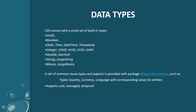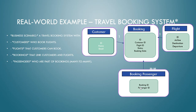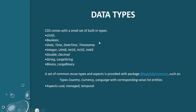Next, data types. For an ID field it needs to be unique, so we use UUID, which generates a unique identifier for every user. These are some of the inbuilt data types in CDS. There are also reusable data types such as country, currency, and language — these are inbuilt features. For example, if you use the language data type it will support multiple languages automatically.